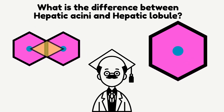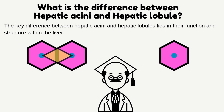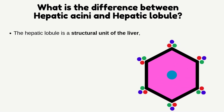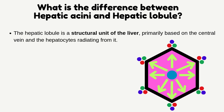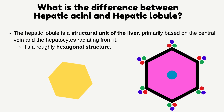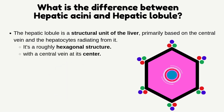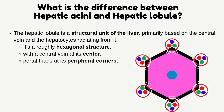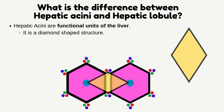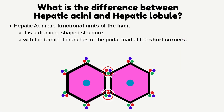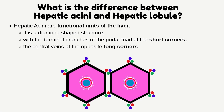The key difference between hepatic acini and hepatic lobules lies in their function and structure within the liver. The hepatic lobule is a structural unit of the liver, primarily based on the central vein and the hepatocytes radiating from it. It's a roughly hexagonal structure, with a central vein at its center and portal triads at its peripheral corners. Hepatic acini are functional units of the liver — a diamond-shaped structure, with the terminal branches of the portal triad at the short corners and the central veins at the opposite long corners.